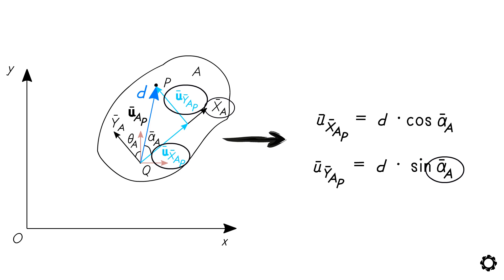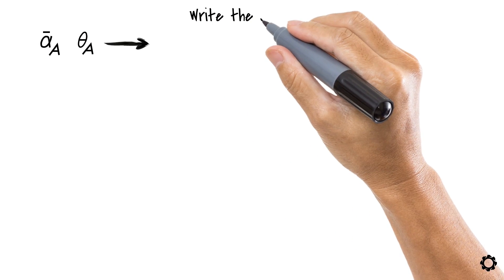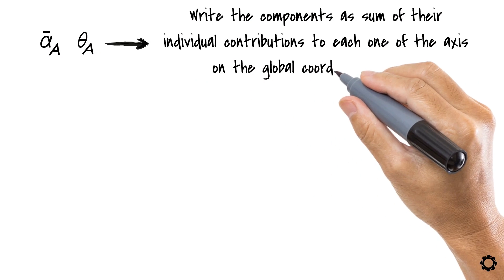Now considering both angles ᾱ_a and theta_a, we could write the components as some of their individual contributions to each one of the axes on the global coordinate system.